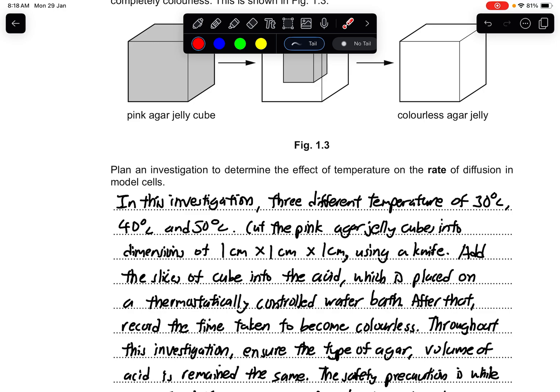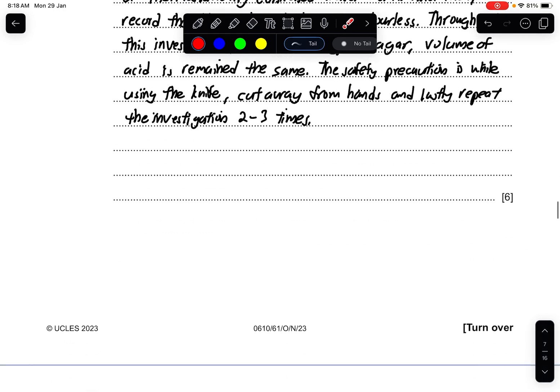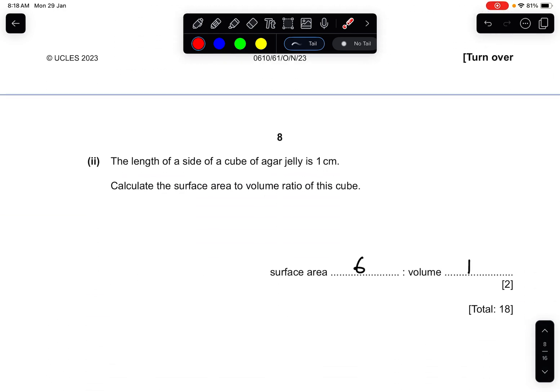Part two: the length of the side of a cube of agar jelly is 1 centimeter. Calculate the surface area to volume ratio of this cube. There's a bit of trickiness in this question but actually it's math. If I draw a cube, there are six faces.